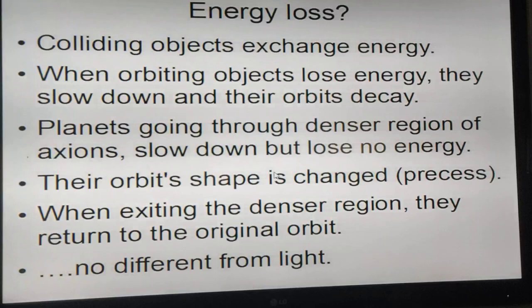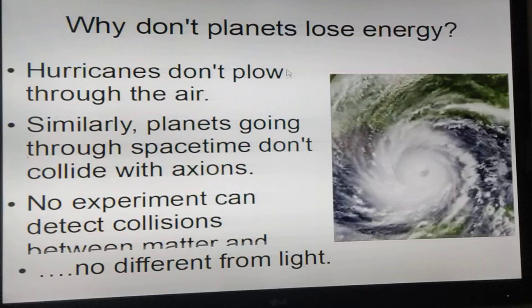Whenever you have objects that are colliding, there's energy being exchanged between the objects themselves. When orbiting objects collide with something else and lose energy, they will slow down and the orbit will decay. Planets going through denser regions of axions slow down, but just like light they do not lose energy. The orbit shape changes, they precess, and when they come out from the denser region they return back to the original orbit. No different from light.